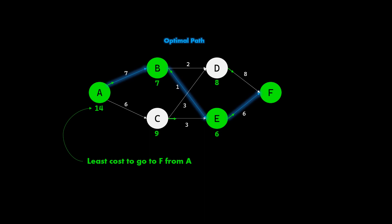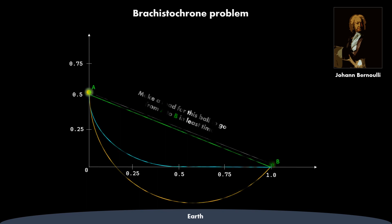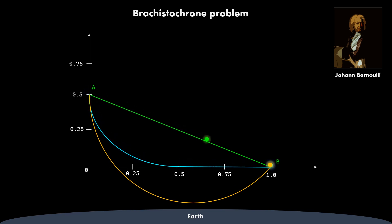Now, we will use this algorithm for solving the brachistochrone problem. The brachistochrone problem was put forth by Johann Bernoulli in 1696. The problem statement is simple: make a road for a ball to roll from A to B such that the time taken for the journey is minimized. There are a number of ways one can build this curve connecting A and B. Which curve is the optimum? We will try to build the optimum path using the dynamic programming algorithm we just learnt.